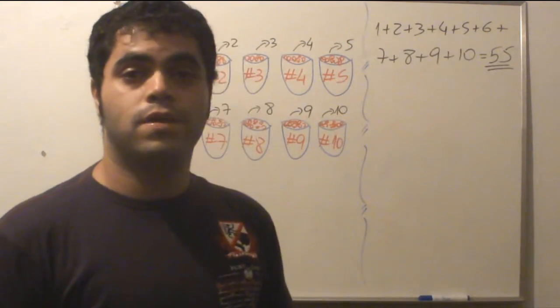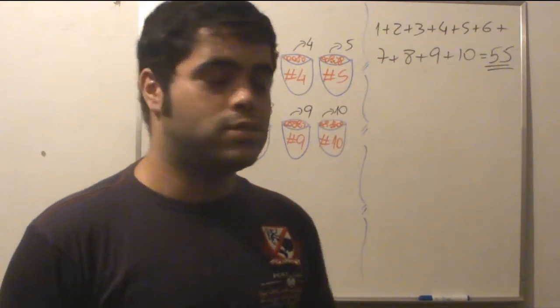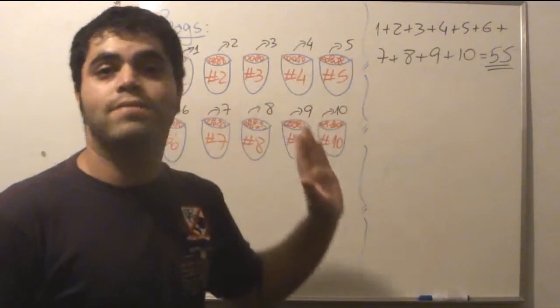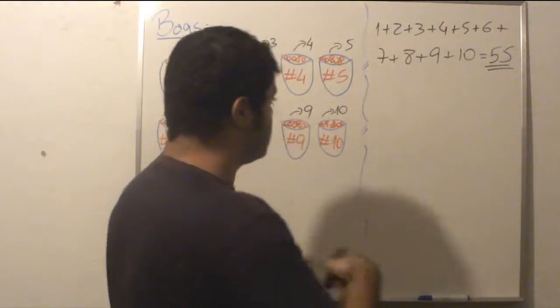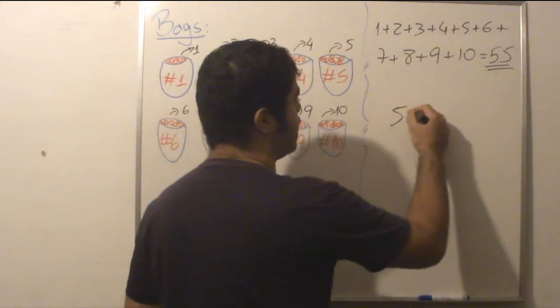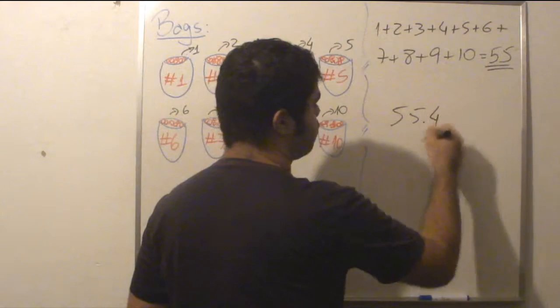So for example, if the counterfeit coin is in the fourth bag, when I weigh them together I would have a weight like 55.4 grams.